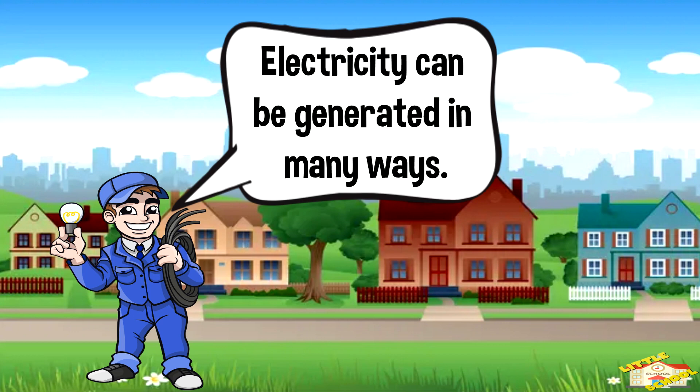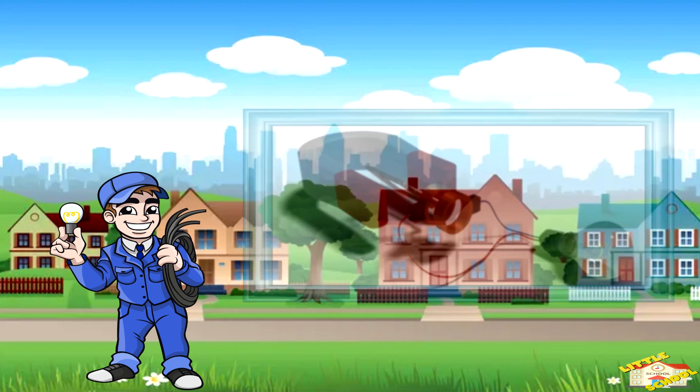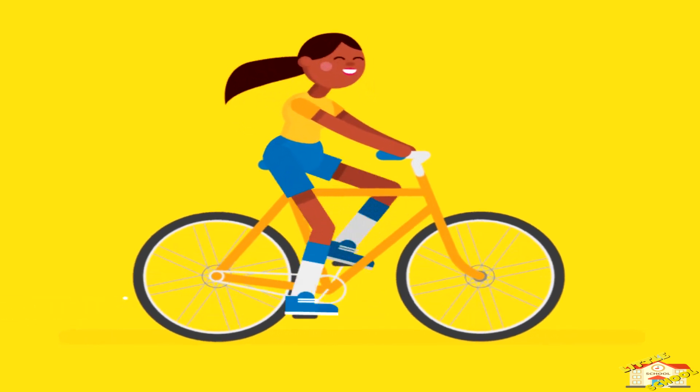Electricity can be generated in many ways. One cool way is through something called a generator, which can turn motion into electricity. Imagine pedaling a bike—your effort makes the wheels move, and that motion can be turned into electricity.